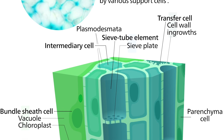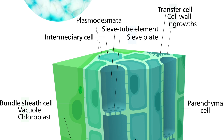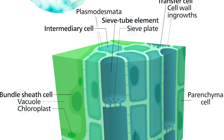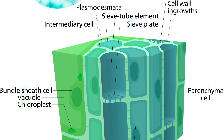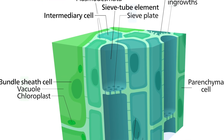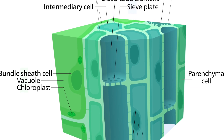Instead, the cell walls between the cells break down to form special sieve plates, and these allow water carrying dissolved food to move freely up and down the tubes.